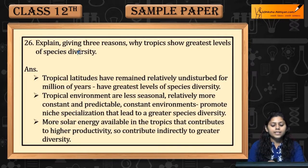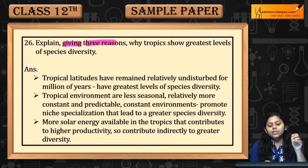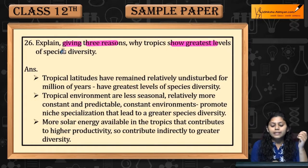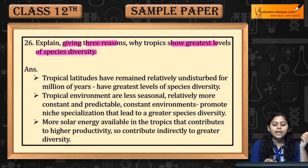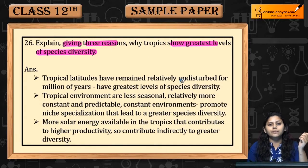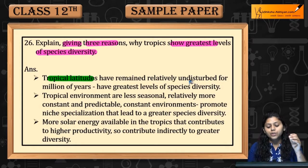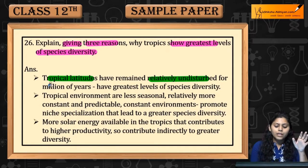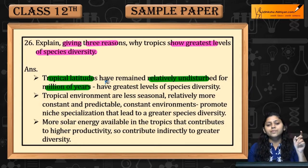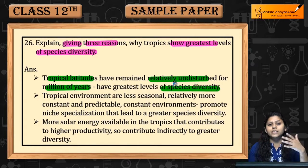Question No. 26: Explain giving three reasons why tropics show the greatest level of species diversity. Tropical latitude is relatively undisturbed for millions of years, therefore the species diversity is greater.